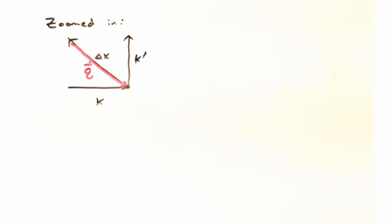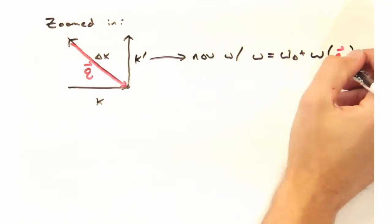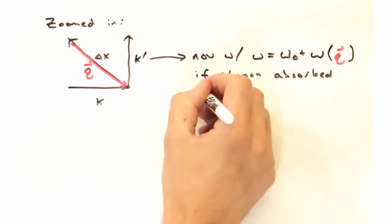So now let's consider the case of a phonon being absorbed by that incident red light. When the phonon is absorbed by the light, the frequency at k prime is now going to be the original frequency, omega 0, plus the frequency of this particular q vector.